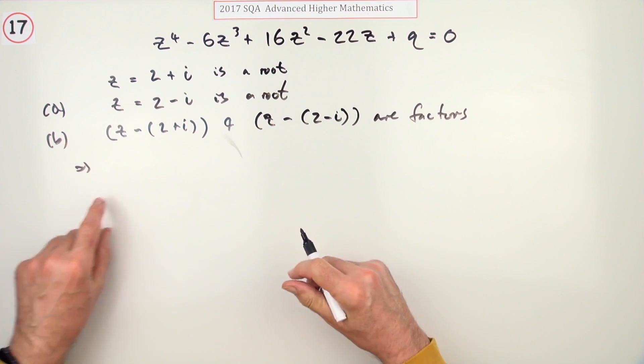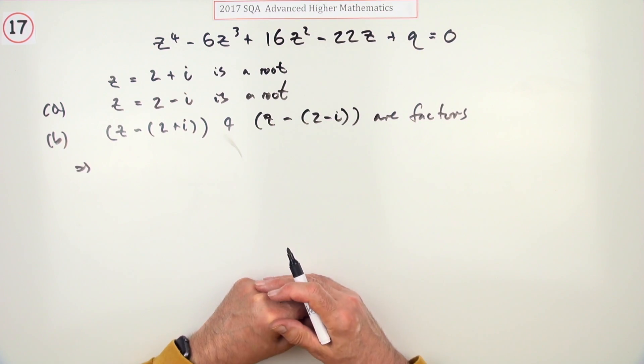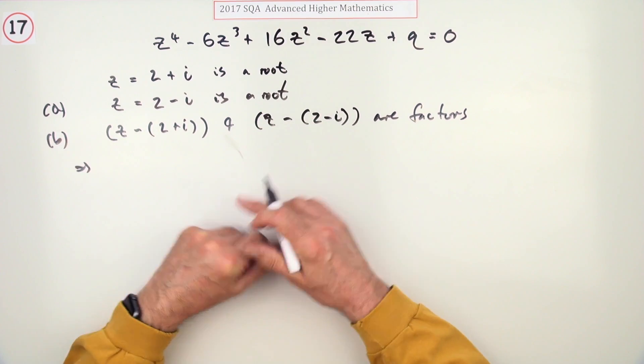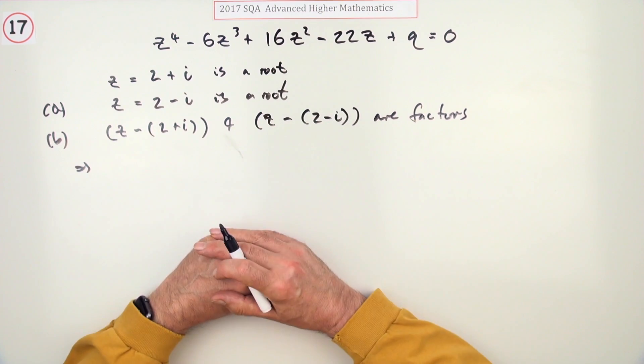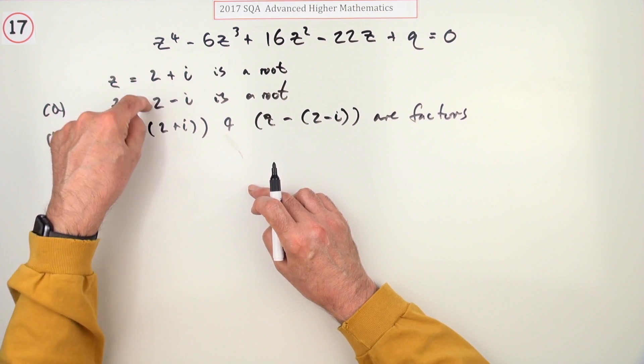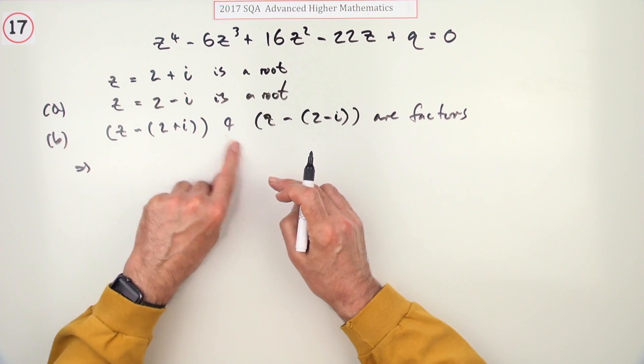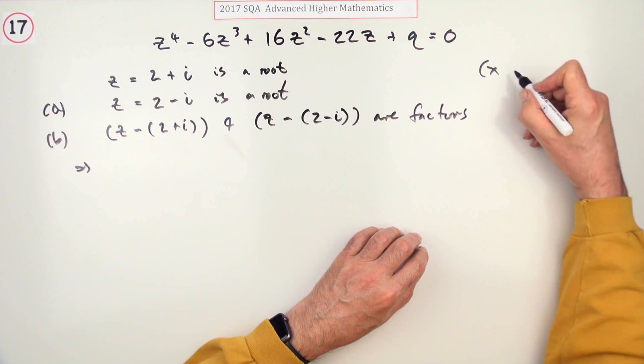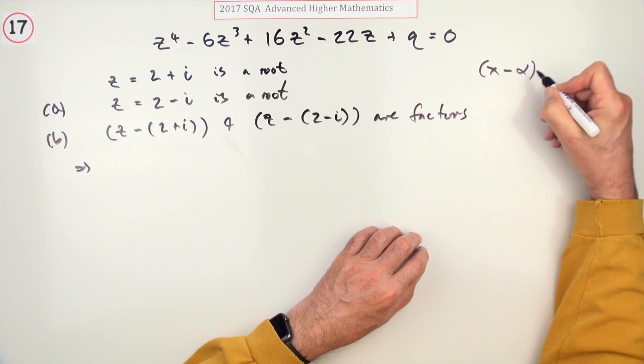Which means if you multiply them together, you'll get the quadratic factor that produced them. There's a quick way of multiplying them together because you've got a conjugate pair of complex numbers. There used to be a thing in the Higher about roots of a quadratic: if α and β are roots...